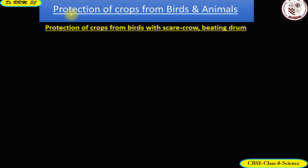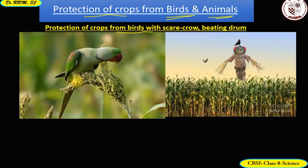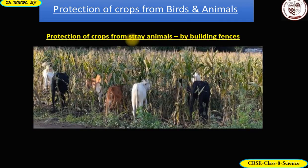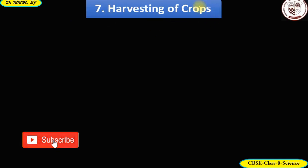Farmers also have to protect their crops against wild birds and stray animals. Wild birds destroy maturing crops like maize and millet; they can be scared away by beating a drum or with the help of a scarecrow. Stray animals such as wild boar, stray cows, bulls, and buffalo are kept out by putting up a fence around the field.